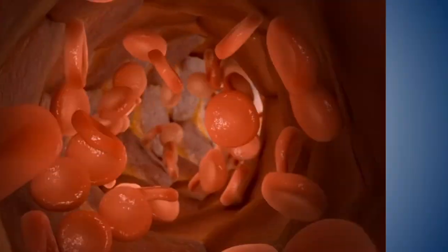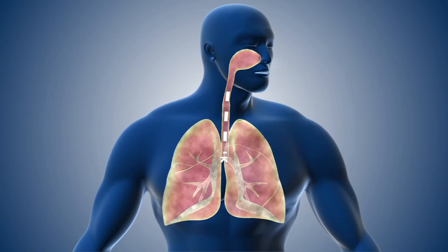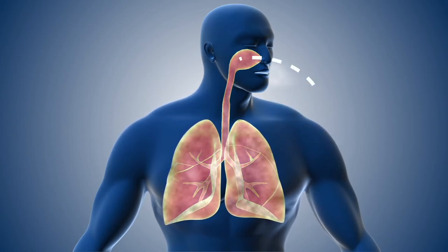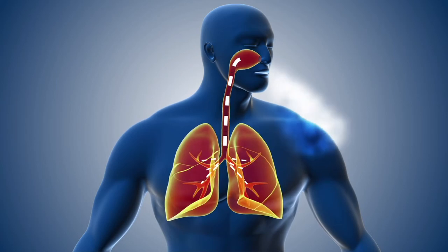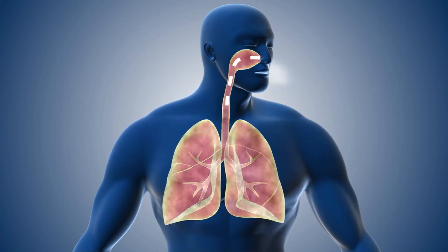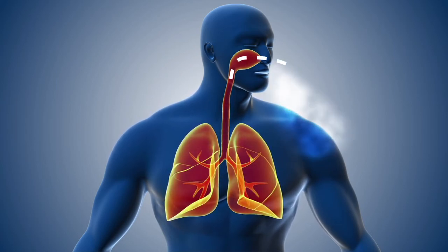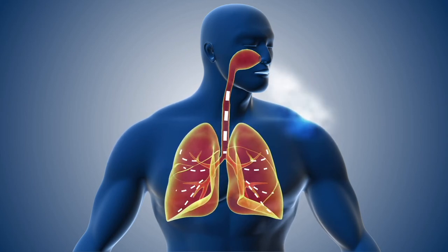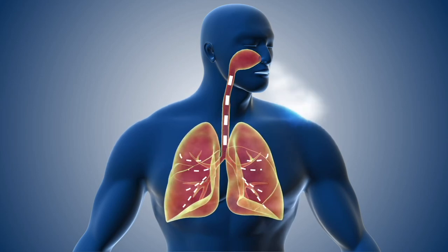To lose the carbon dioxide, we need to exhale, and this is where the nervous system kicks in again, causing the diaphragm to ball up and the intercostal muscles to relax, making the chest cavities smaller and forcing the lungs to compress. The carbon dioxide-rich air is expelled and the cycle begins again.